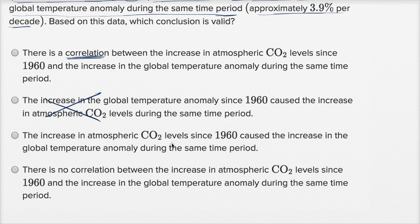The increase in atmospheric CO2 levels since 1960 caused the increase in global temperature anomaly during the same time period. Well, that might be a reasonable hypothesis, but that data doesn't tell us that. It doesn't tell us. There might have been some other cause that caused both of those two things to go up, or this might have just been two things that happened to move together, but it wasn't because of any kind of causation one way or the other.